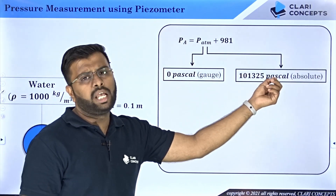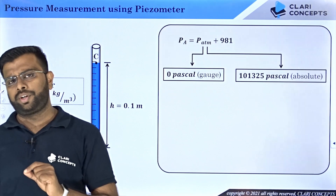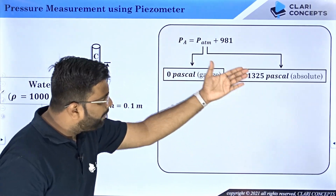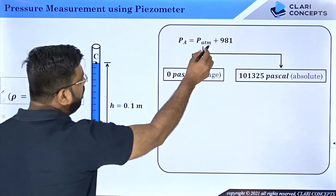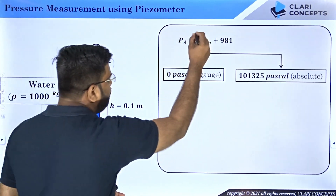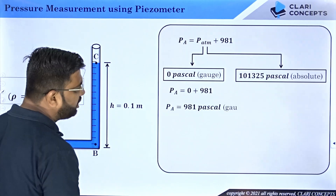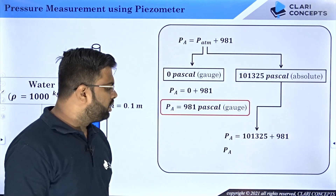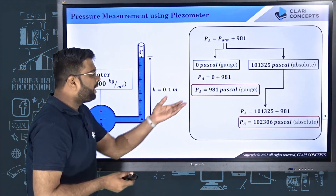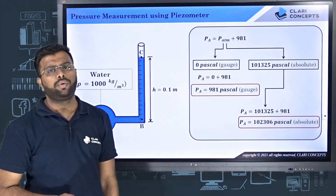I have explained the difference between absolute pressure, gauge pressure, and vacuum pressure in a previous lecture — please refer to that if needed. If you substitute P_atm as zero pascal (gauge), you get P_A = 981 Pa gauge. If you substitute P_atm as 101325 Pa (absolute), you get P_A = 101325 + 981 Pa absolute. Both values represent the same physical pressure; the difference is only the reference point — for gauge pressure the reference is atmospheric, and for absolute pressure the reference is absolute zero (pure vacuum).